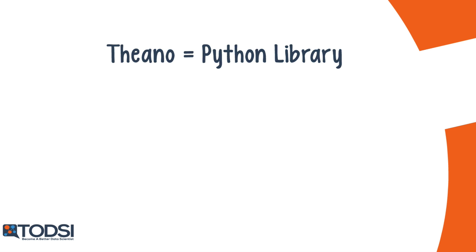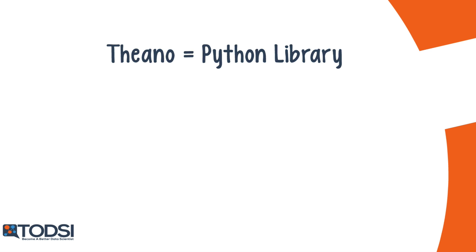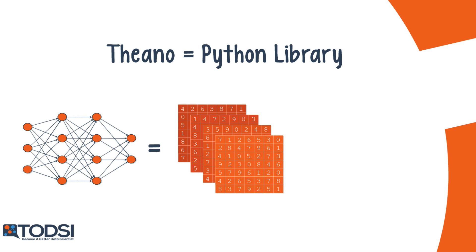Theano is a Python library that lets you define and evaluate mathematical expressions with vectors and matrices, which are rectangular arrays of numbers. Technically speaking, both neural nets and input data can be represented as matrices, and all the standard net operations can be redefined as matrix calculations.